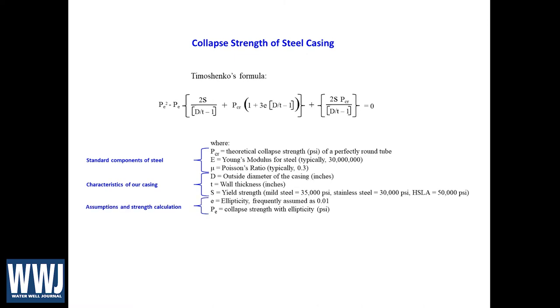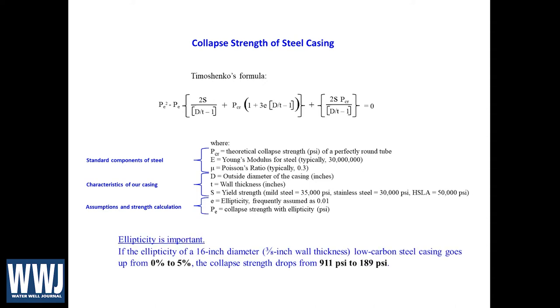So the last couple of variables here really are some assumptions we make and our answer to our calculation. The ellipticity—how out of round are we? We generally assume one percent. That's just to be kind of a safety factor. So our casing, despite the best efforts of suppliers, they will build for us pretty round casing, but it might be slightly out of round. So we'll assume one percent. That means that we're going to assume that it's less strong than what this top value would have told us. And then the collapse strength that we calculate. So there's a number of variables that are embedded within here that's appropriate for us to consider and talk about.